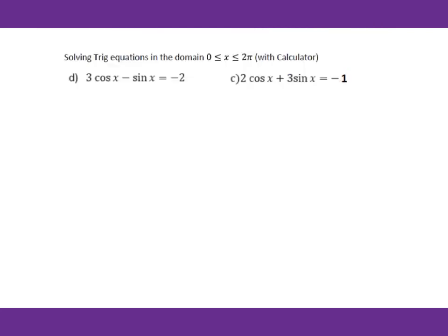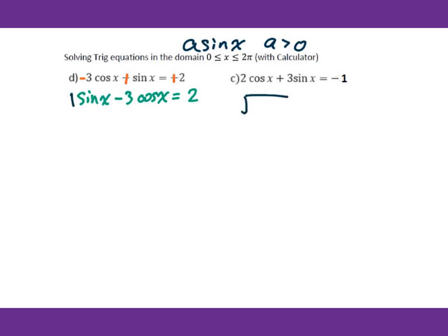Now let's go to part d. We have 3cos(x) − sin(x) = −2. First, we need the a·sin(x) pattern with a > 0. So I rewrite, changing signs and rearranging: sin(x) − 3cos(x) = 2. Then working on √(a² + b²): 1² + (−3)² gives √10. So we divide by √10 for both sides of this equation.